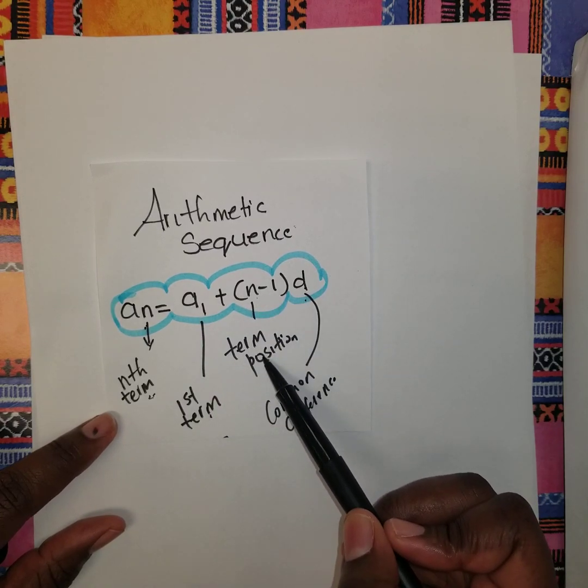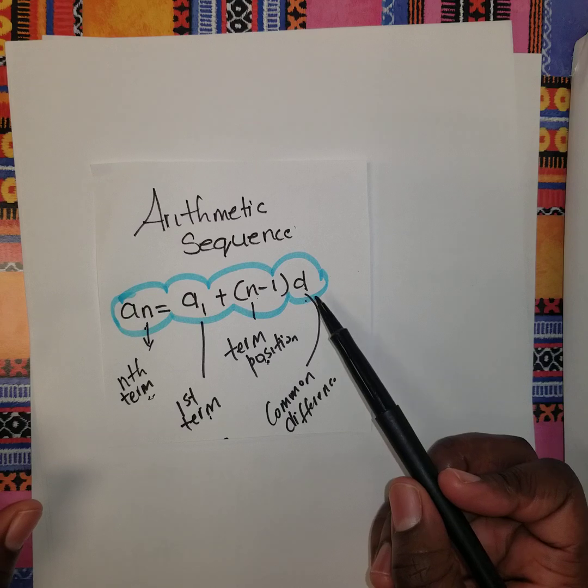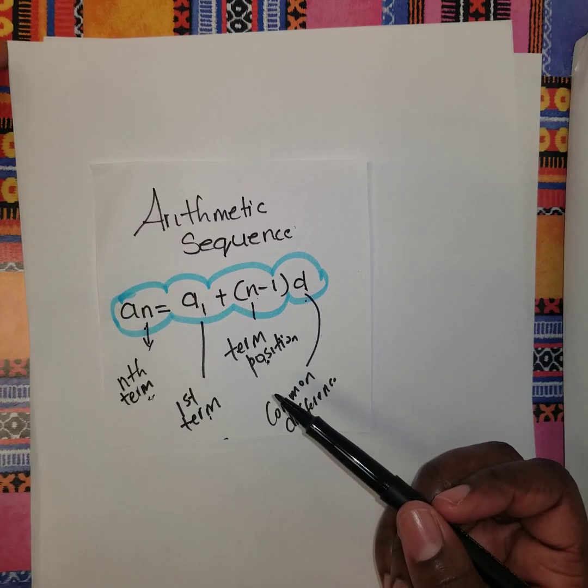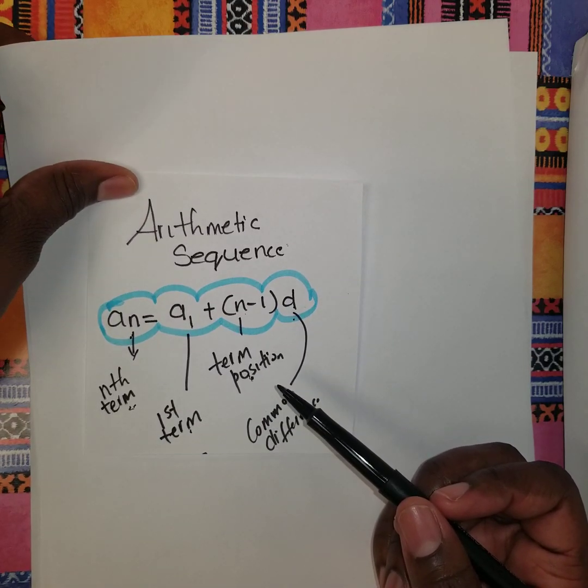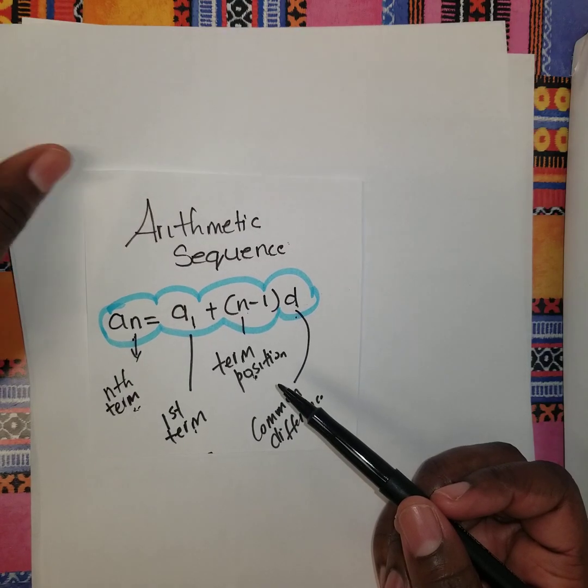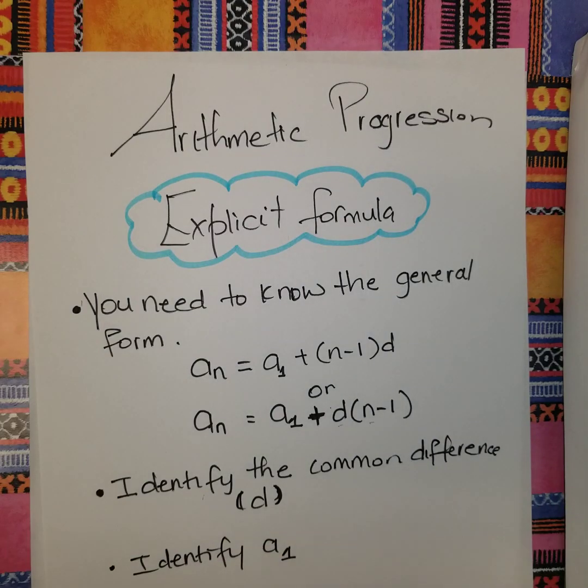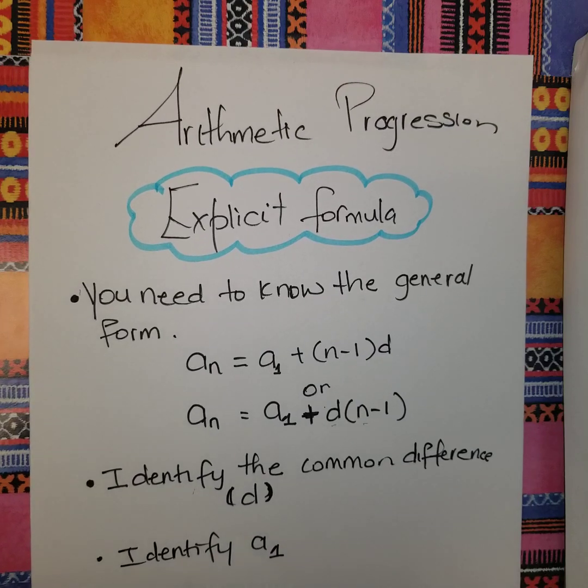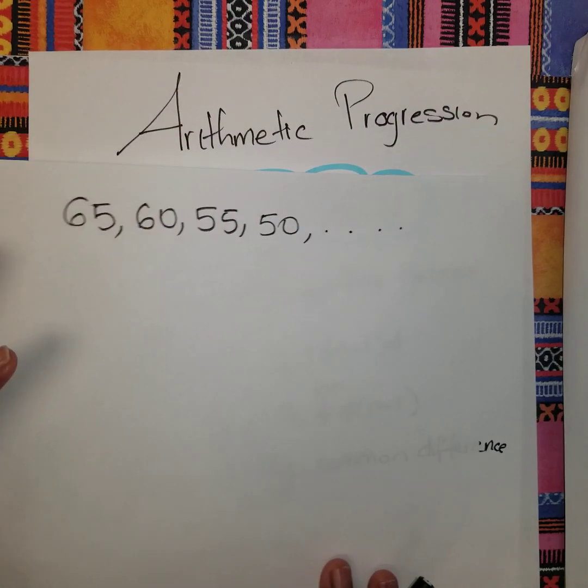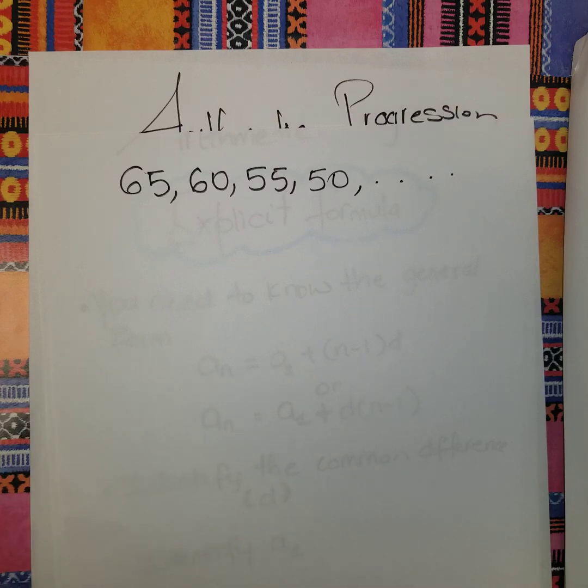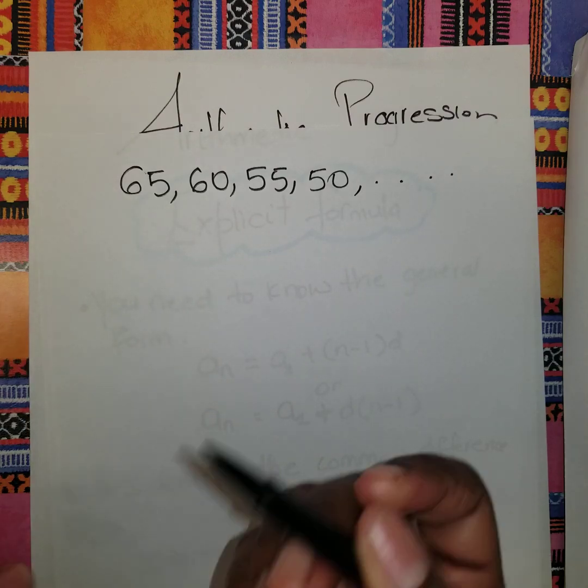We know that n is the term position we are trying to find, and d is the common difference, which is the difference between the second term and the first term. We need to know the common difference and to identify the first term.